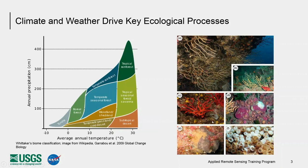At shorter timescales, weather has really important effects on ecological systems as well. These are pictures from a 2003 heat wave in the Mediterranean. This is a study that documented coral death — often called coral bleaching — because you can see it turns corals white, following this heat wave. This is driven by a short-term weather pattern. These are just two examples that span the range of ecological responses strongly affected by climate and weather.